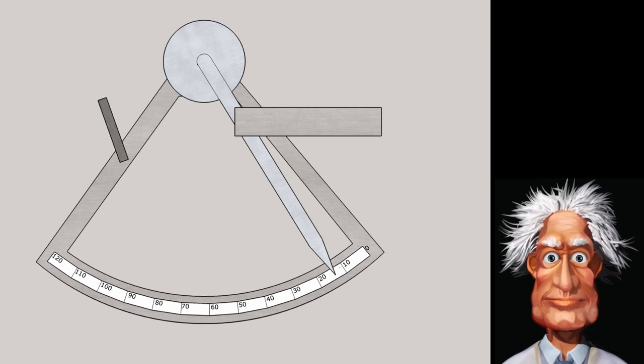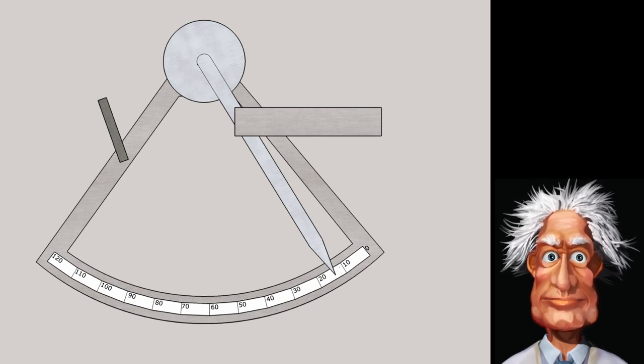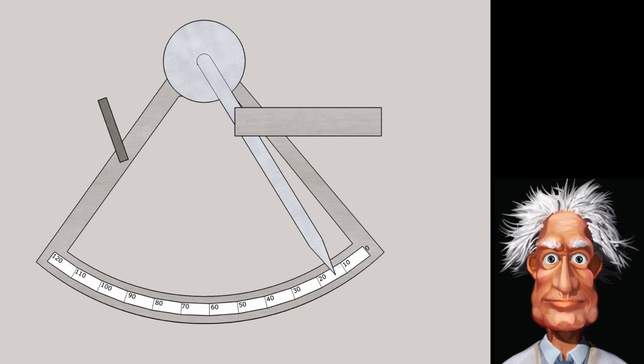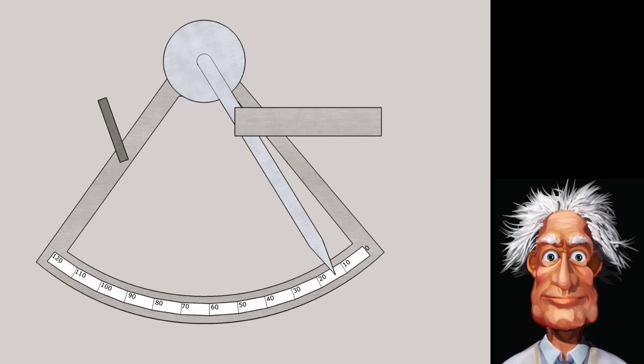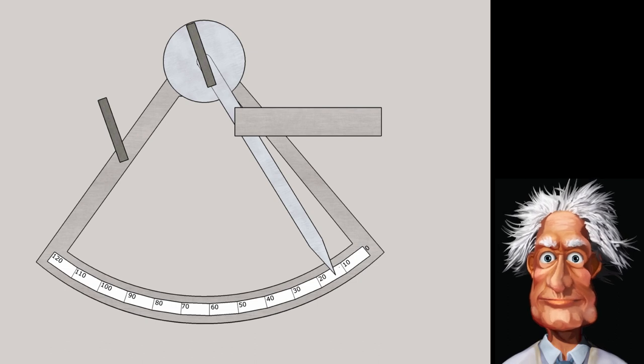In reality, there also is a so-called vernier scale mounted that makes a very accurate setting of the index arm possible to an accuracy of one arc minute. Also, there are some filters for looking at the sun. On the index arm is the index mirror mounted.